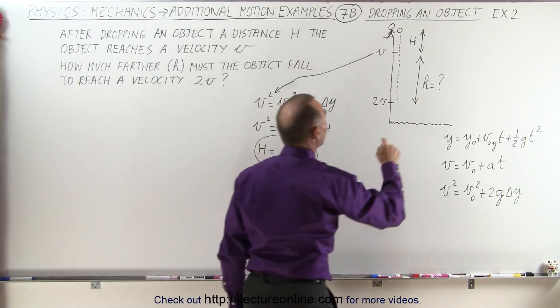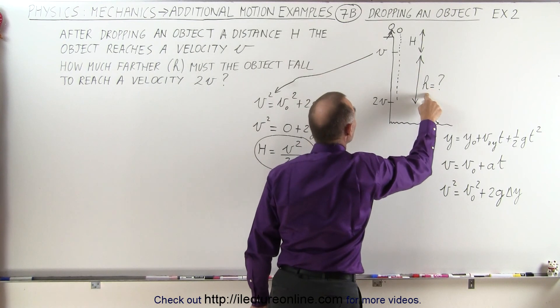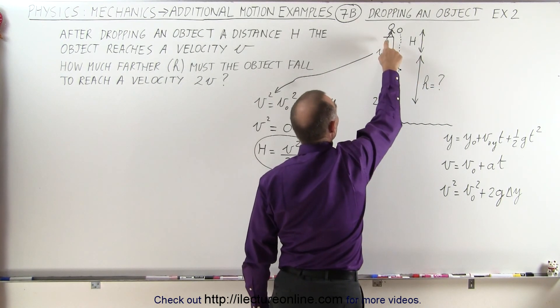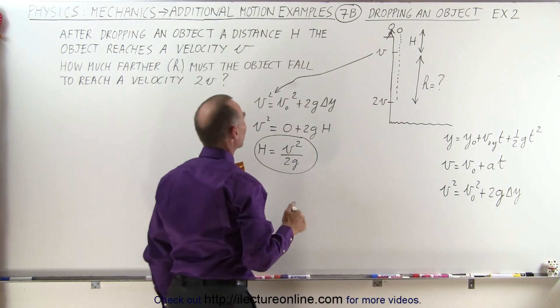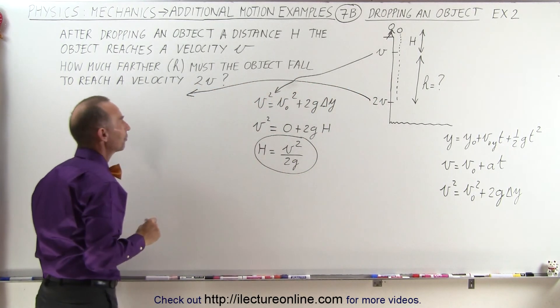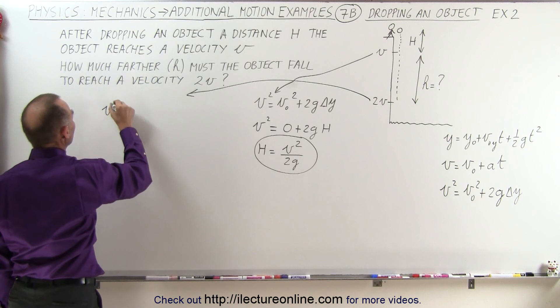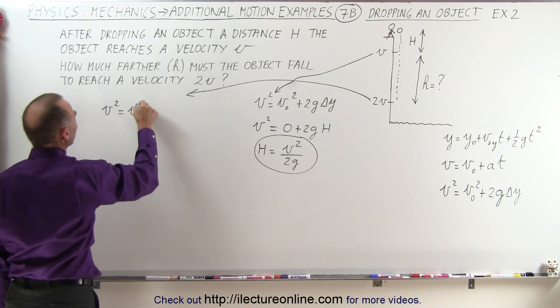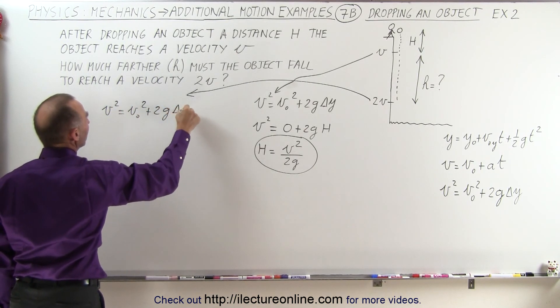but now for the distance H plus h here, and notice that now we go from zero to 2v. So now we're going to do this again a second time, but now we reach a velocity of 2v. So we have v² equals v initial squared plus 2g times delta y,